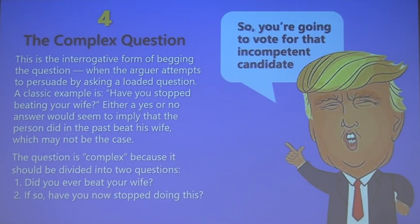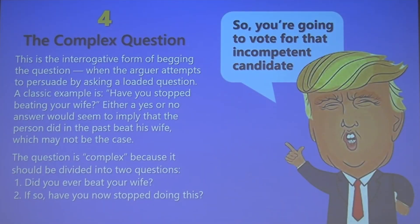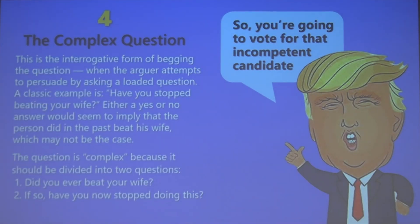A good example of this would be: 'So you're going to vote for that incompetent candidate, right?' He's assuming that the person's going to vote and that the vote they make is for an incompetent candidate, whereas he should separate those.